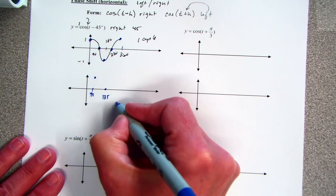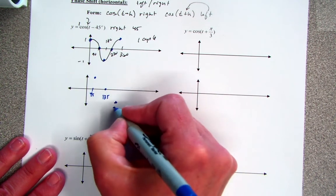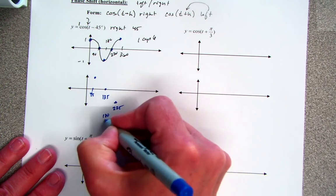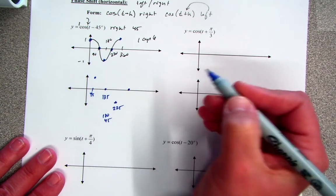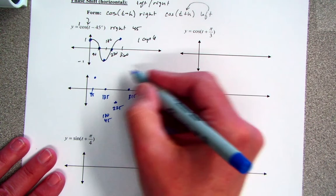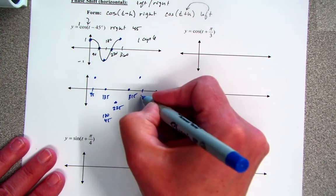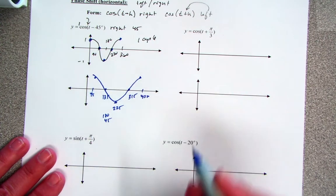Instead of bottoming out at 180, I pulled it to the right another 45, which is 225. 270 is where it hits the axis, so I'm going to add 45 to that. And lastly, 360, 45 over would be 405. So it's the same shape of the graph, it's just slid over.